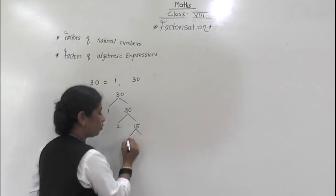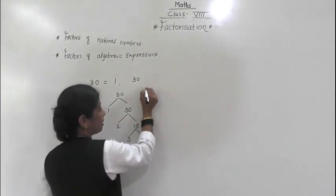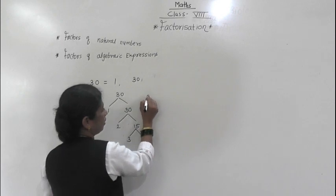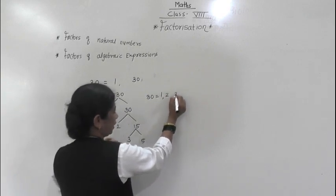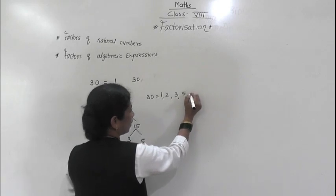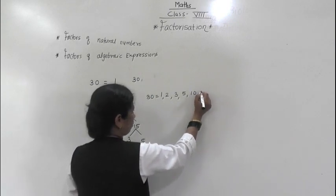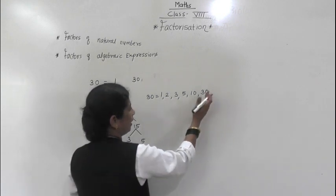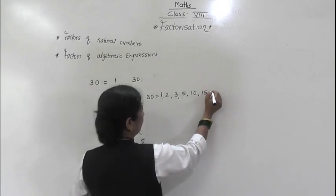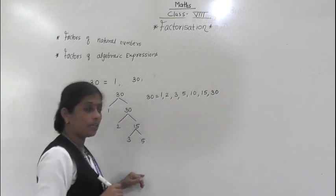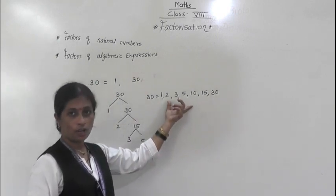And again, 3 × 5 = 15. So we can express 30 like this: factors of 30 are 1, 2, 3, 5, 10, 15, and 30. These are all the factors of 30.